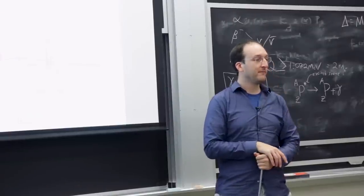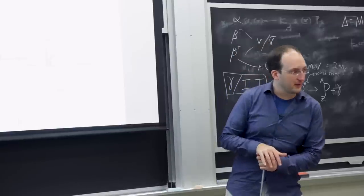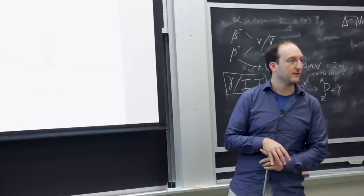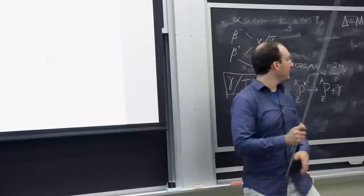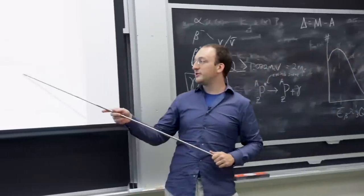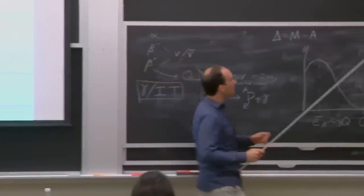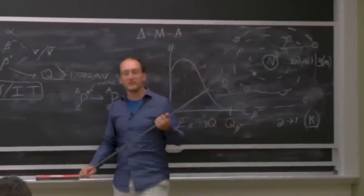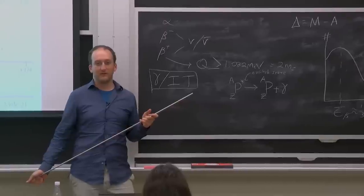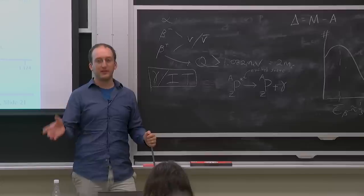The L-shell electron will be ejected with greater energy than a K-shell electron due to the fact that it's less tightly bound. It doesn't take as much of the gamma's energy to get it out. If you were to get the outermost electron ejected — which happens in Auger emission — it can take anywhere from like 1 to 7 eV. That's the work function, the energy required to take the outermost electron out.